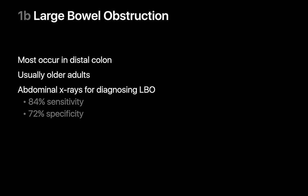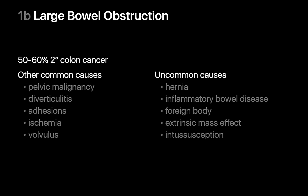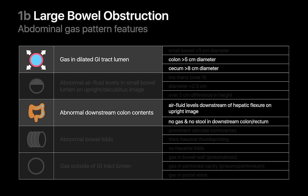Large bowel obstructions typically occur in the downstream colon and in older patients. Abdominal x-rays are relatively sensitive for picking up large bowel obstructions, though slightly less specific than for small bowel obstructions. Most large bowel obstructions are caused by colorectal cancer, though there are many other causes. X-ray findings include gas-filled, dilated cecum and colon upstream from the colonic obstruction site, with the rectum and any colon downstream collapsed and imperceptible. Sometimes air-fluid levels may be present upstream, but since the colon is great at reabsorbing water, colonic air-fluid levels tend to disappear as the obstruction becomes more chronic.